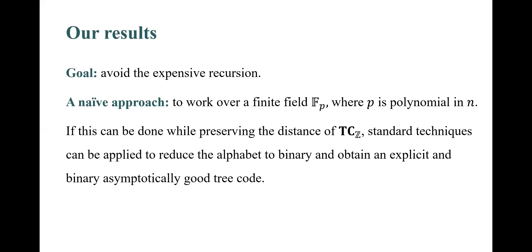In our work, we try to improve the result by considering the construction for T_C_Z while avoiding the extensive recursion, aiming to surpass the log log n barrier. A naive approach for doing so is to work over a finite field F_p, where p is polynomial in n. If this can be done while preserving the distance of T_C_Z, standard techniques can be applied to reduce the alphabet to binary, and by that obtain an explicit and binary asymptotically good tree code.